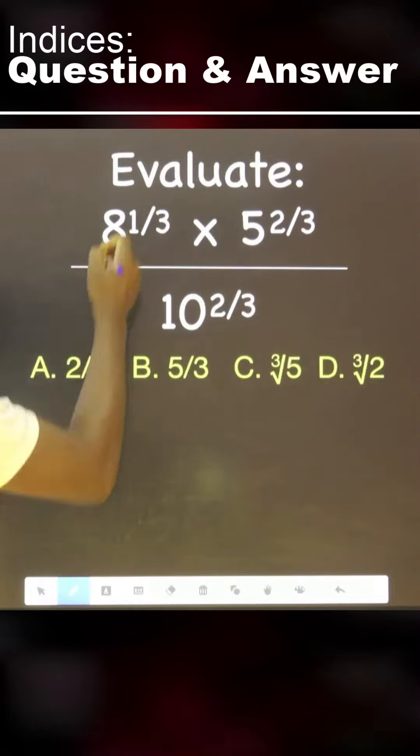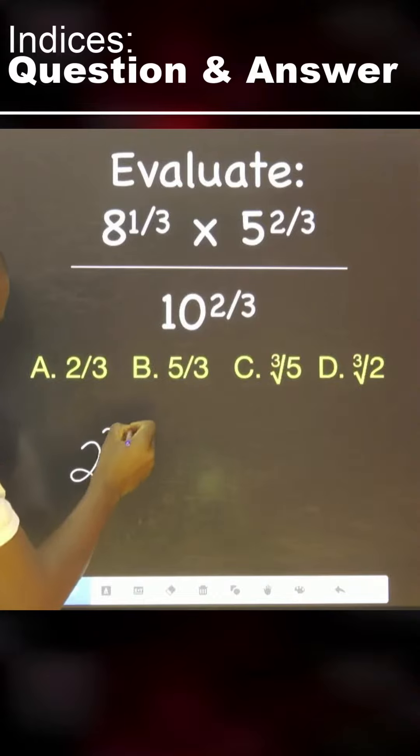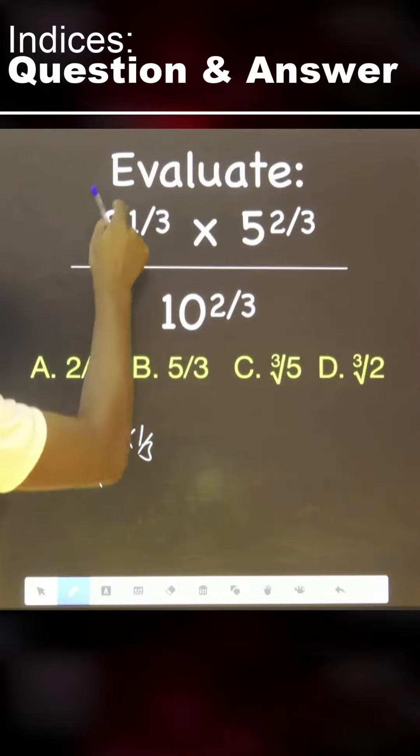This is 2 raised to the power 3. This one still remains, multiply by 1 over 3 that was there before.